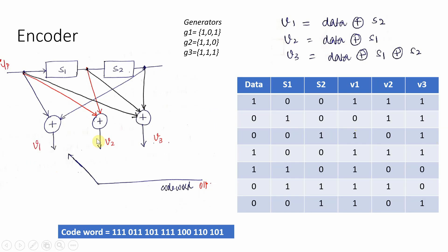The multiplexer switch takes the output of V1, V2, and V3 in one clock cycle and presents them at the output. So for every clock, V1, V2, and V3 are obtained, and the final codeword sequence is formed by concatenating V1, V2, V3 for every clock cycle. If you count the number of bits in the final codeword, it is equal to 21, which matches the codeword length we calculated earlier.